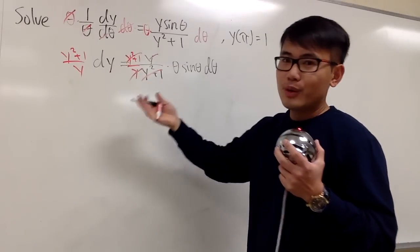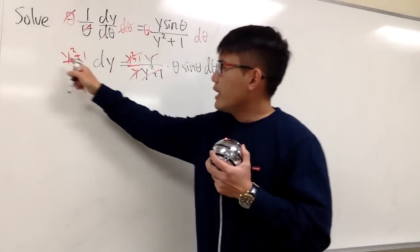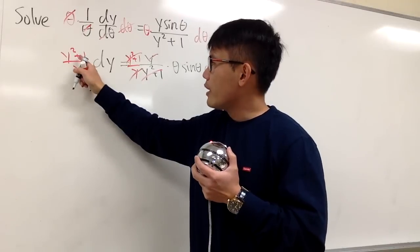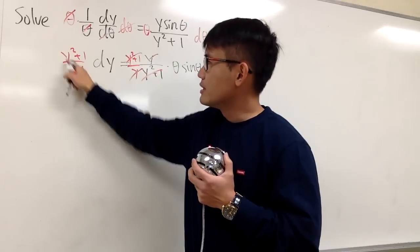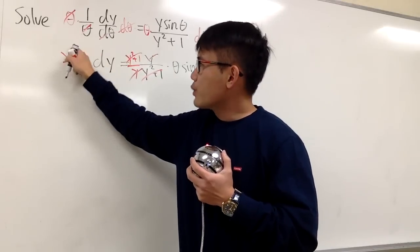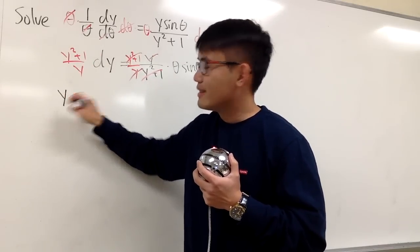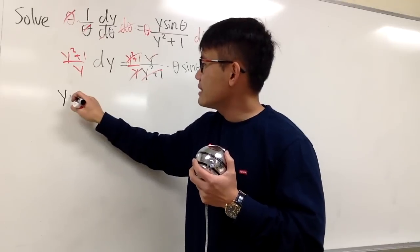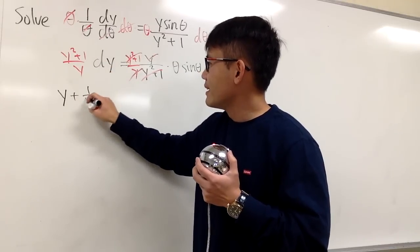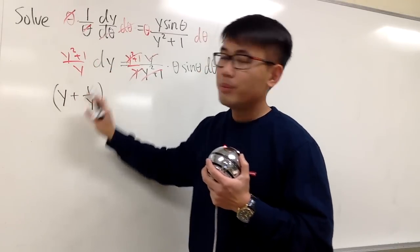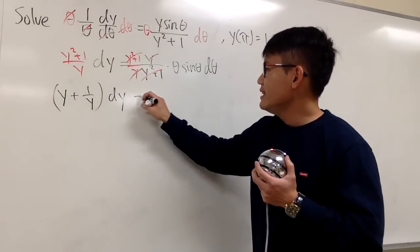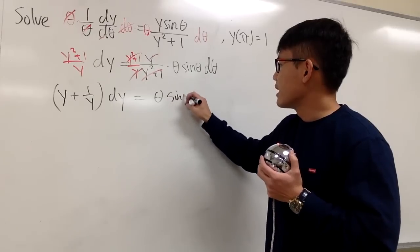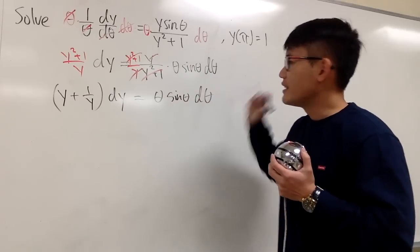Look at this: y squared plus 1 over y. To integrate that, let me just split the fraction. Y squared over y, we have y, plus 1 over y. This is what I want to look at. And then we have the dy after that. And this is equal to theta times sine theta dθ.